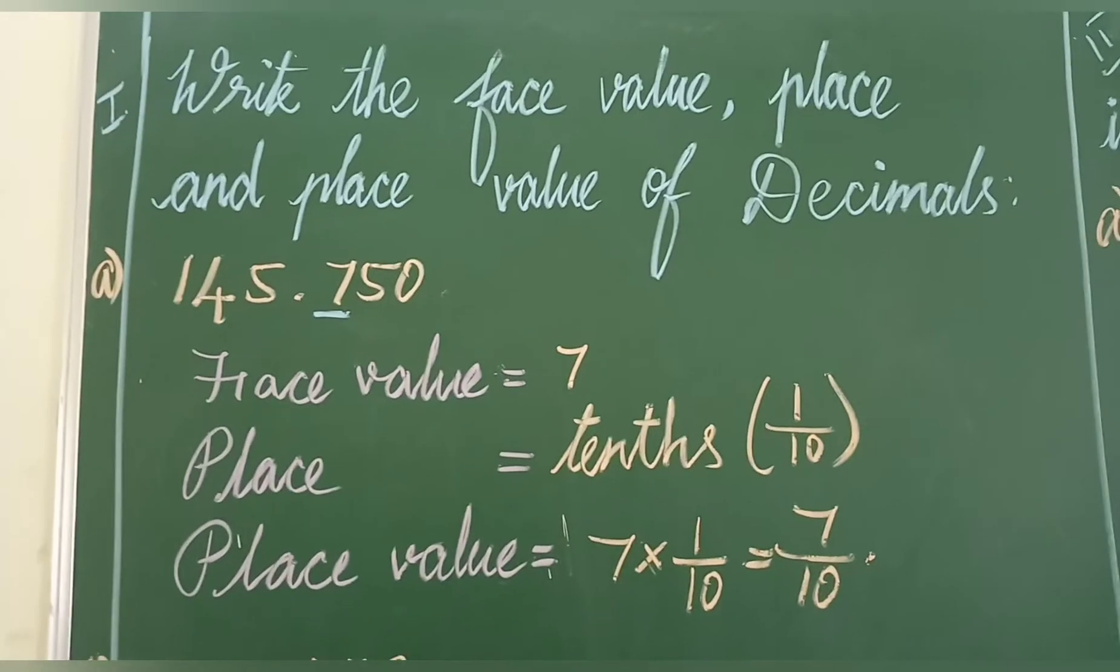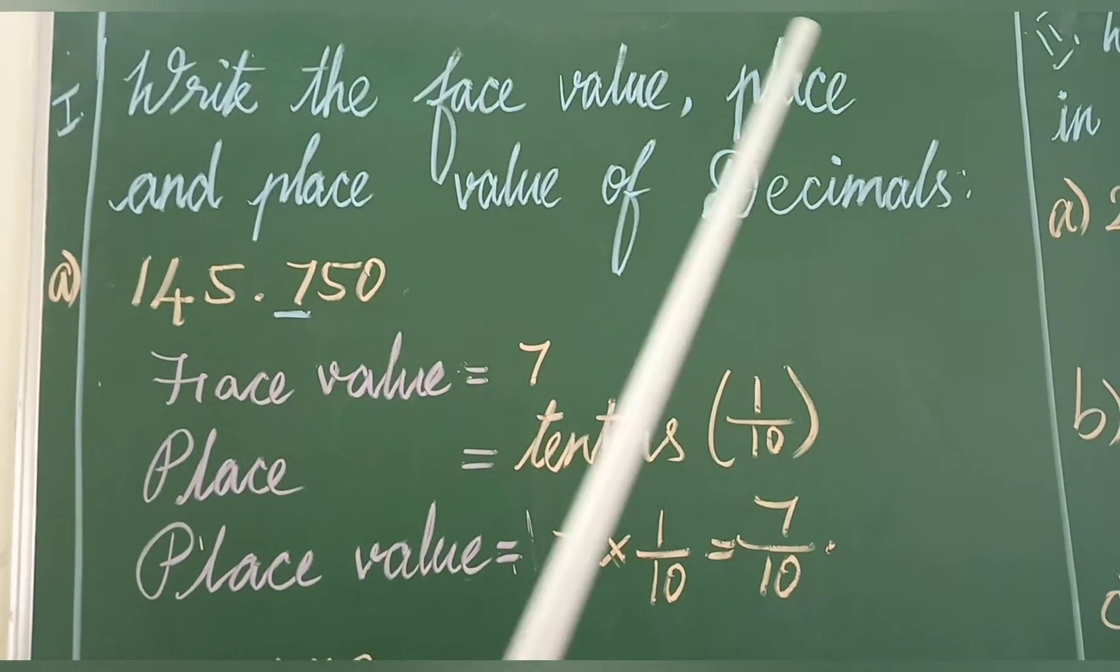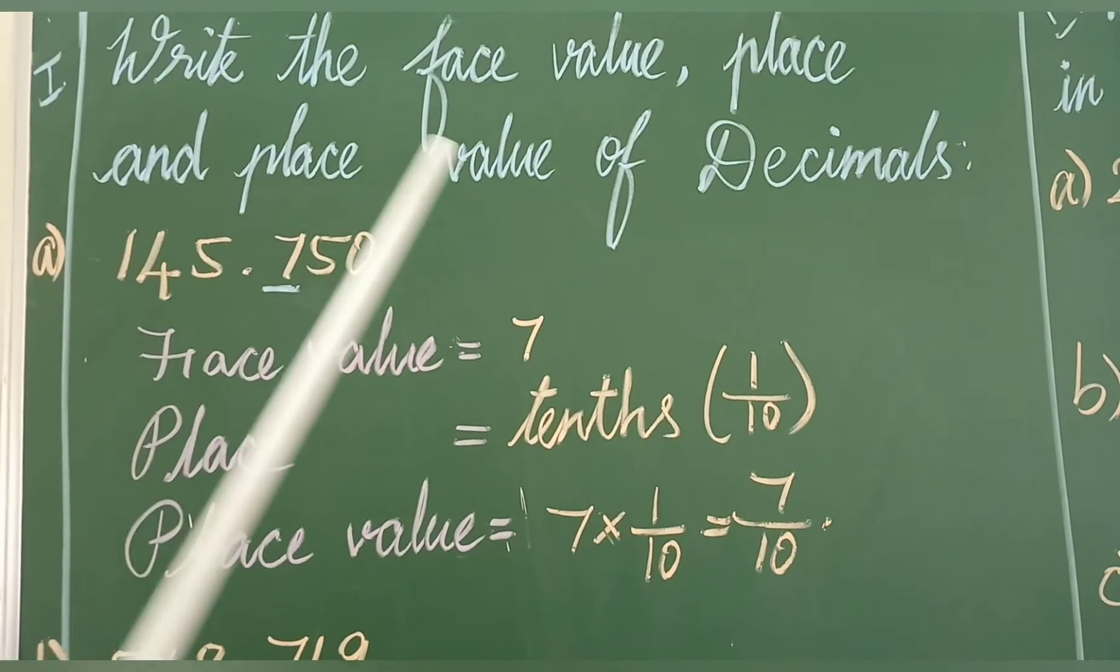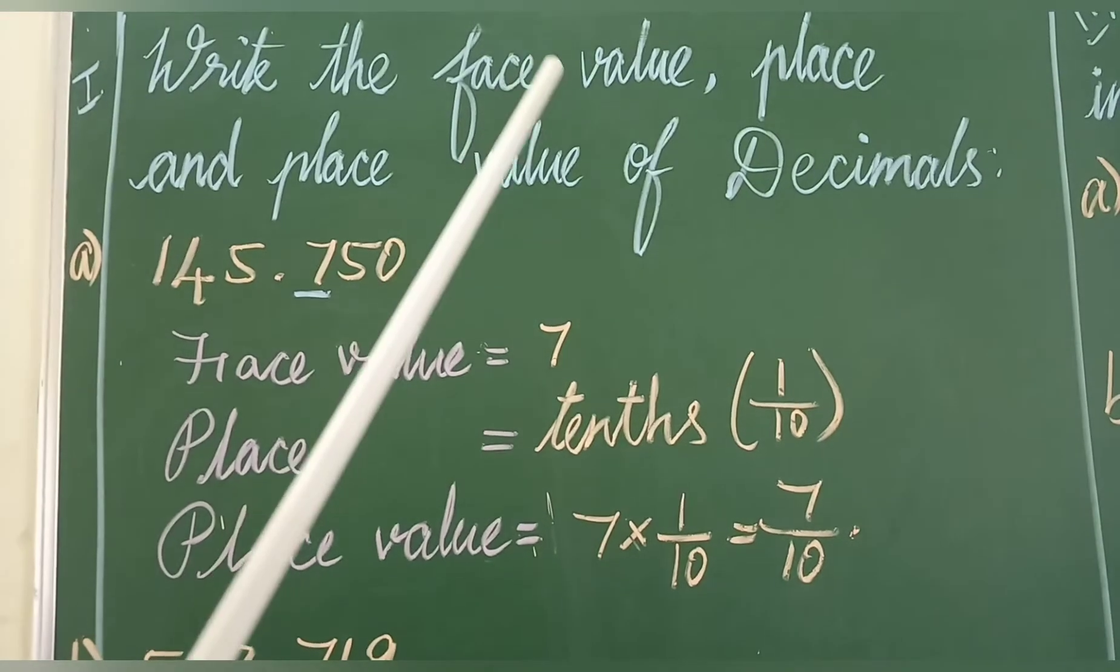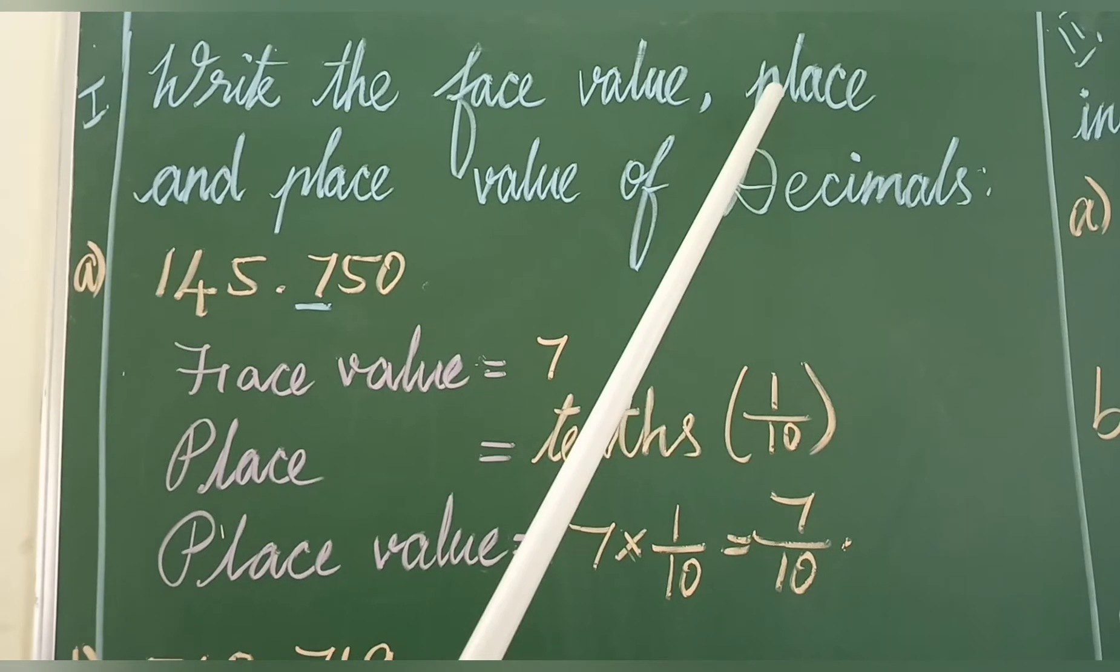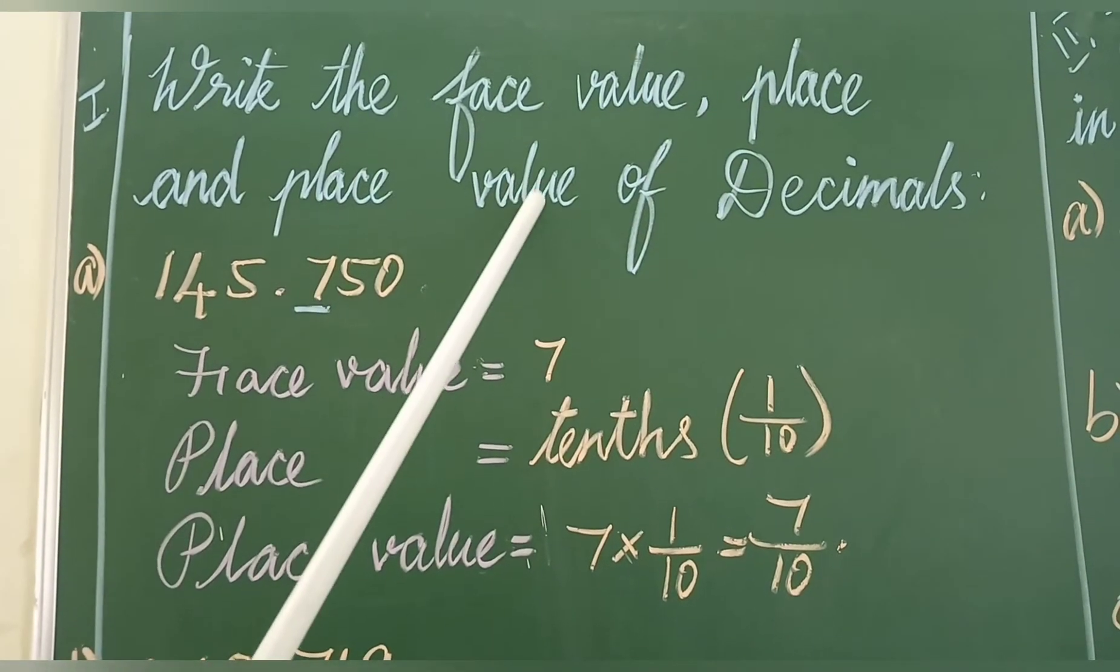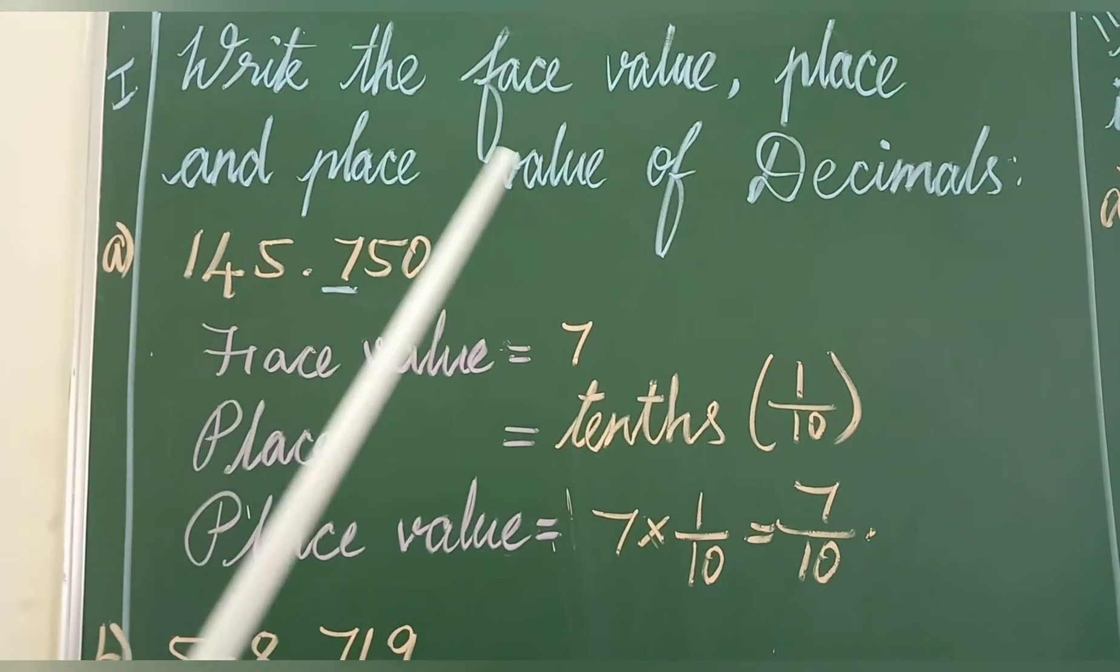Now let's see the exercise. Write the face value, place, and place value of decimals. Face value is the number itself. Place is the position. Place value equals face value times place.